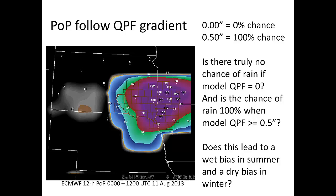I would argue that may not be true in both cases, especially in summer with convection. And this is leading to some biases — at least in the models — where we have a wet bias in summer because the convective parameterization will pretty quickly get you to a half inch with any decent type of forcing, so it's much easier to get to 100%. And conversely, do we get a dry bias in winter where maybe you get a tenth of an inch water equivalent or one to two inches of snow, every model has it, but that ends up being like a 70% chance instead of 100%?